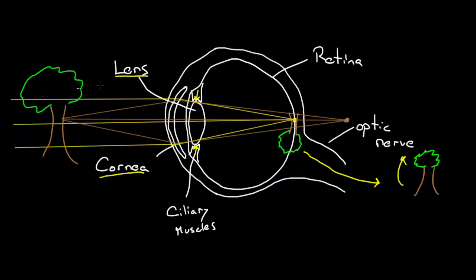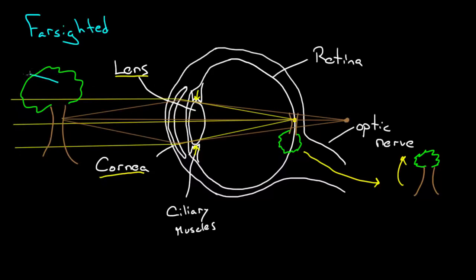For a farsighted person, we add a convex lens in front of the eye. The convex lens creates a virtual image of the nearby object at a farther-away point, tricking the eye into thinking the object is farther away. Now the eye can focus the light onto the retina and produce a nice, clean image.